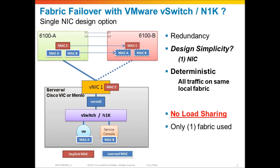Now that we know that in UCS Manager version 1.4 there is support for fabric failover in hypervisor environments — we saw that on the previous slide with Hyper-V — what about VMware? And what about an installation where you have VMware running the vSwitch or the Nexus 1000V? Can you use fabric failover in this scenario as well? Let's take a look at this a little bit closer.